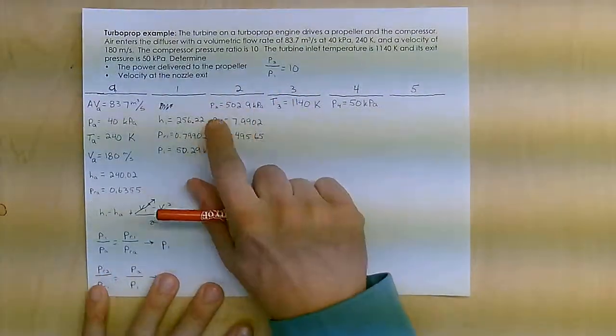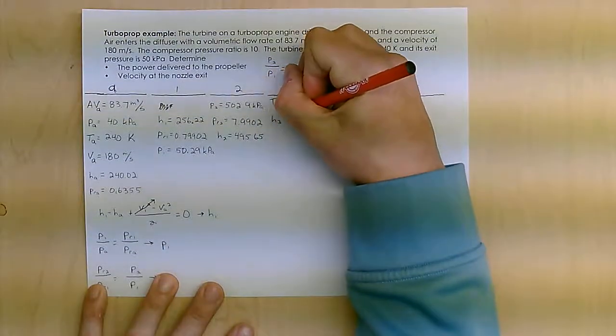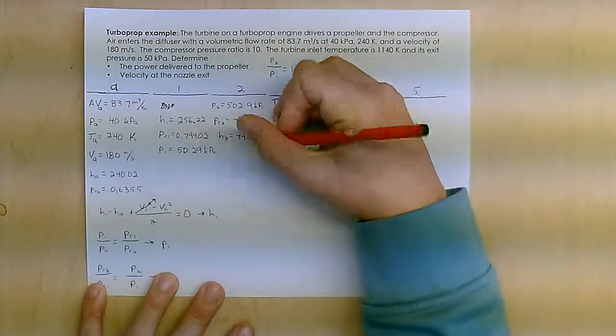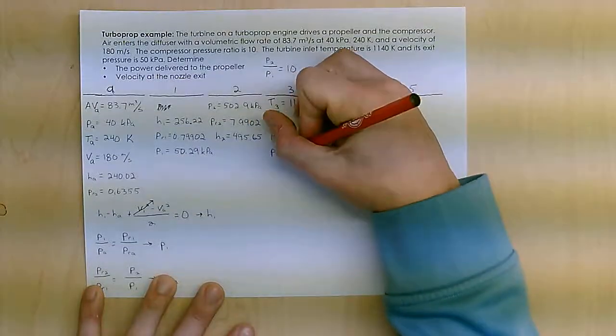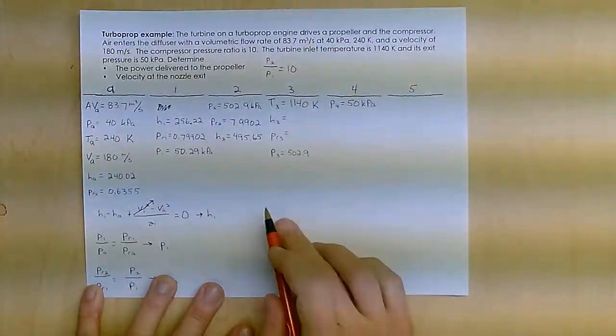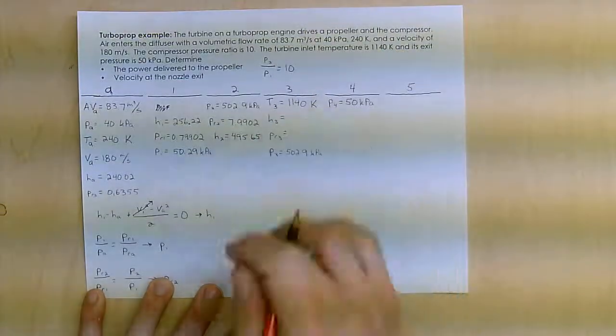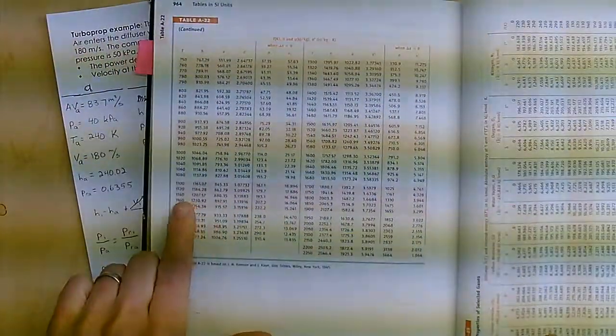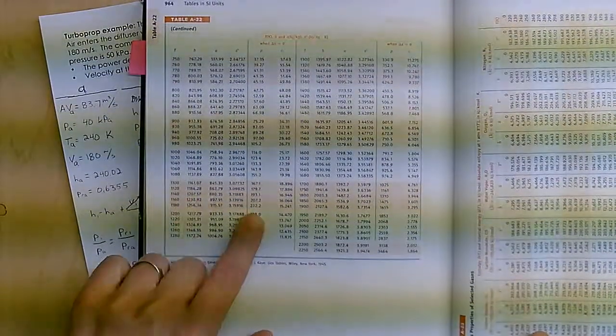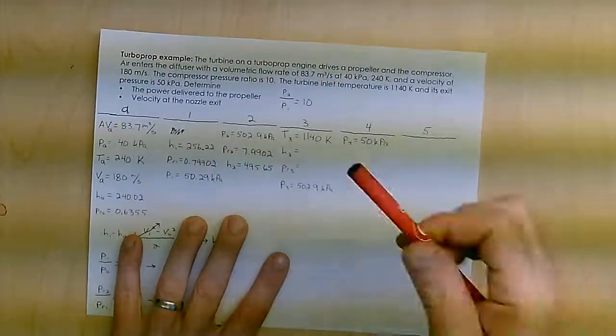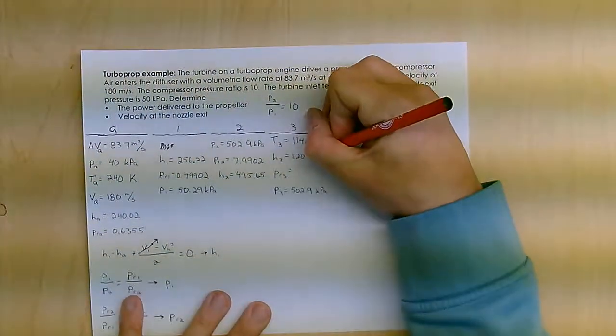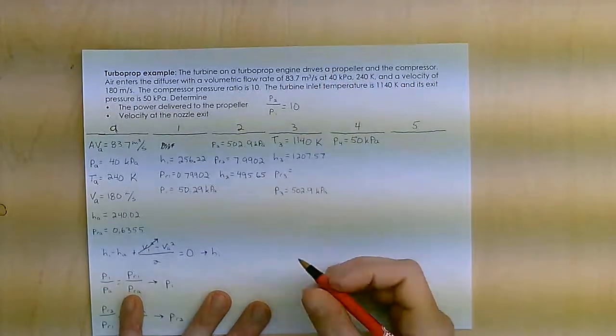So then I go through the combustor. This one's easy, I can go ahead and look up H3 and I'm going to look up PR3. Knowing that P3 is constant across heat additions, so that's going to be 502.9 kilopascals. So let me go ahead and look up H3 and PR3. This one's at 1140, so I'm way over here. So I get an H of 1207.57 and a PR of 193.1.